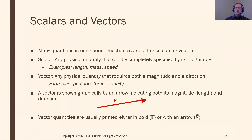Pretty much anything in engineering is either a scalar or a vector. A scalar only has a magnitude and does not have a direction associated with it — just a number. Length, mass, and speed are all scalars. A vector, on the other hand, also has a direction associated with it. Things like position, force, and velocity are vectors. Force acts in a certain direction, velocity is moving in a certain direction, and position is a certain distance in a certain direction from something.